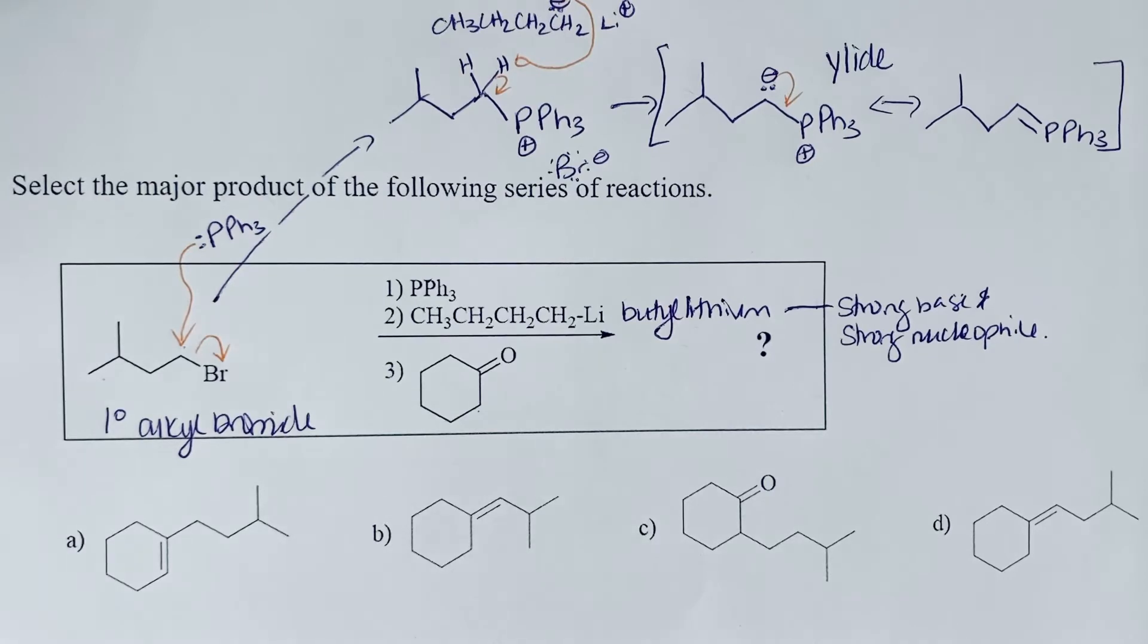This is used for a Wittig reaction. Wittig reactions, or these ylides, form in a Wittig reaction an alkene when they react with a carbonyl, an aldehyde or a ketone specifically.